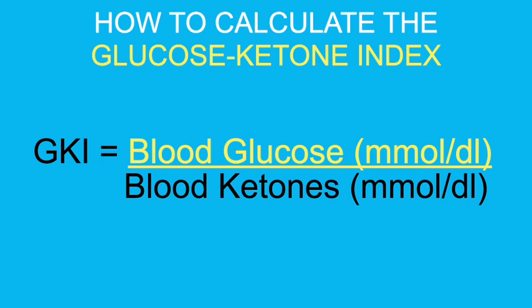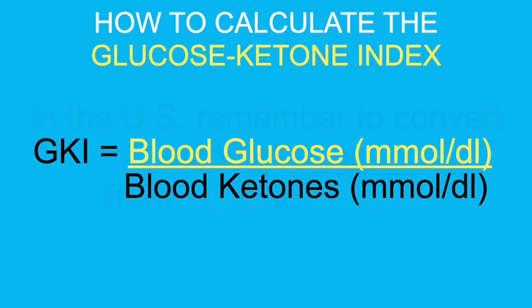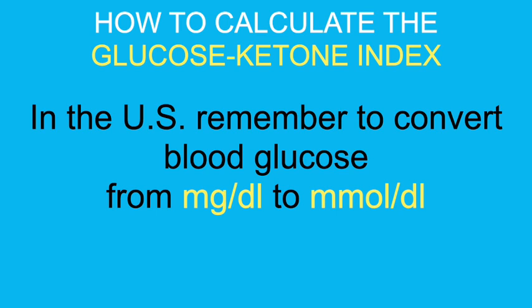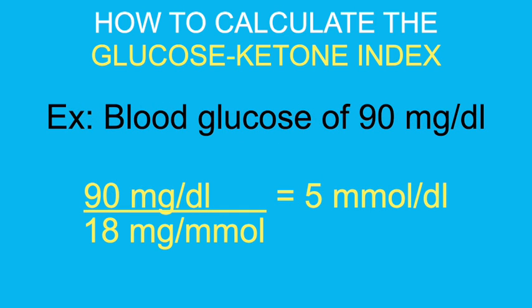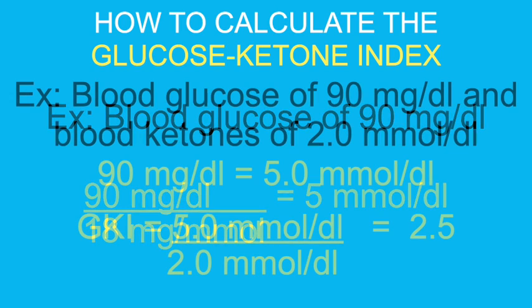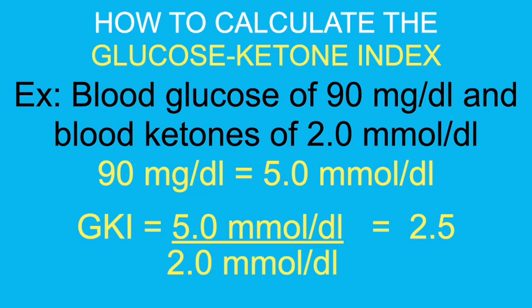One thing to realize is that blood glucose in the GKI is measured in millimoles per deciliter, but in the U.S. we use milligrams per deciliter, so you have to do a conversion. You need to take the milligrams per deciliter of glucose and divide by 18 to get the correct millimoles per deciliter. For example, a blood glucose of 90 mg/dL divided by 18 gives you 5 mmol/L. Then divide that by your ketone level — if ketones are 2 mmol/L — and you get a GKI of 2.5.